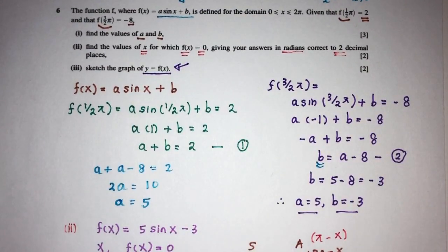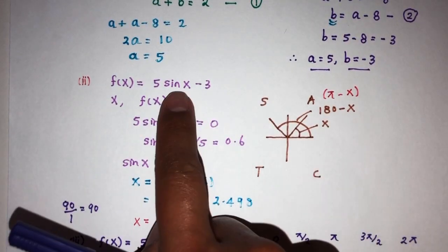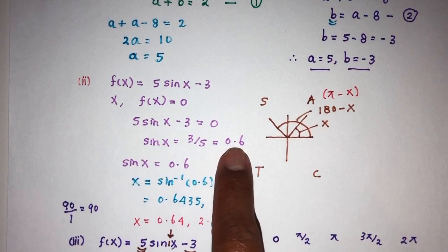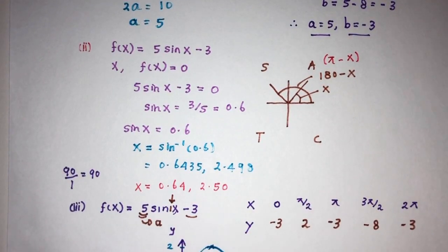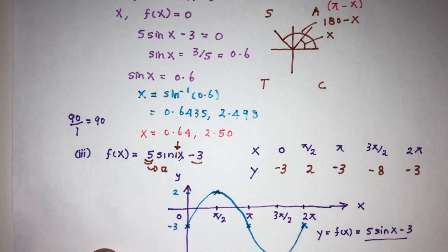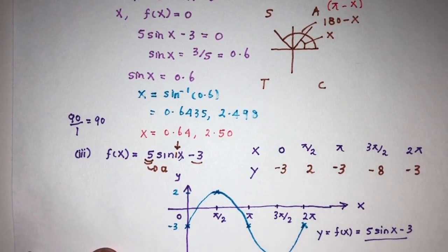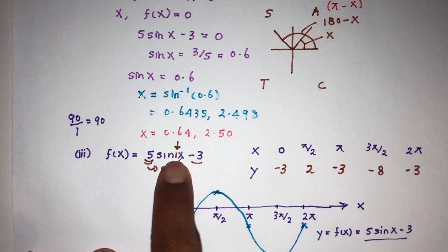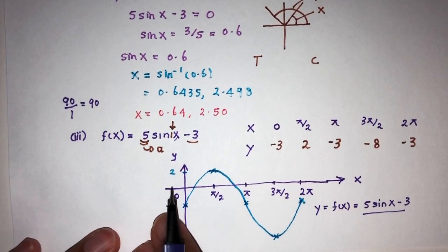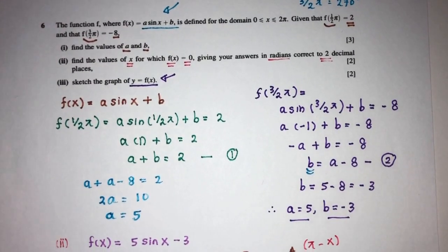At the end, always label your graph as y equals f of x, or you can write 5 sin x minus 3. So what did we learn? For part 1, use the given values to find the unknowns. For part 2, make sine the subject, check the quadrant (positive sine means first and second quadrant), and round to 2 decimal places. For part 3, use a table of values with exact-value intervals, connect the dots with a smooth curve, and label the graph for full marks.